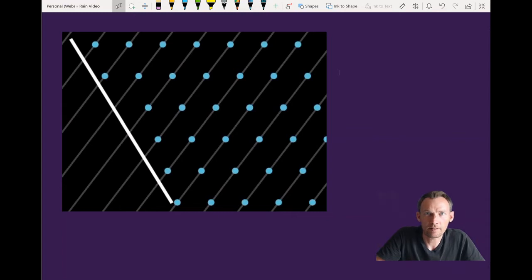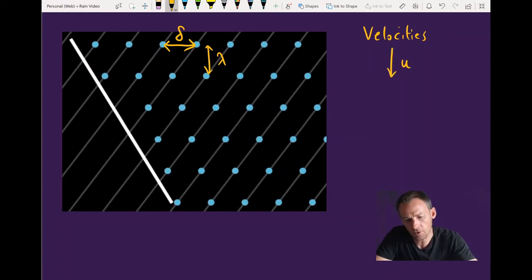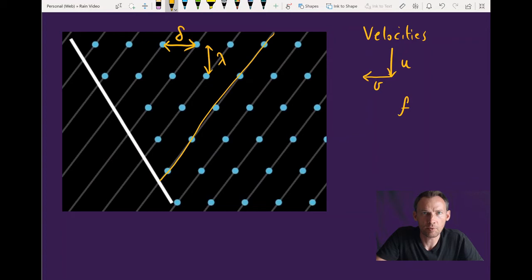Let's define some parameters in this field of raindrops. The horizontal spacing we will call delta, and the vertical spacing we will call lambda. Now velocities we need to define as well. Let's call the downward velocity of the raindrops u. And then since the board is moving to the right, in the reference frame of the board, the raindrops are going to be moving to the left. And so we'll give them a leftward velocity of v.